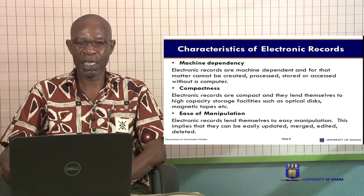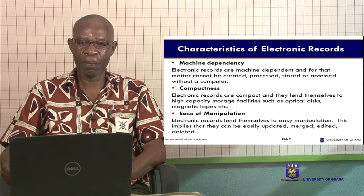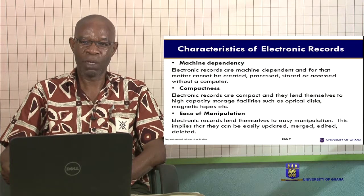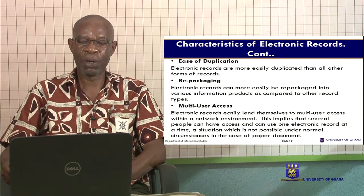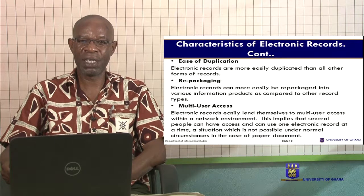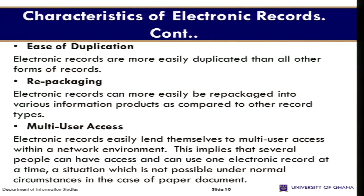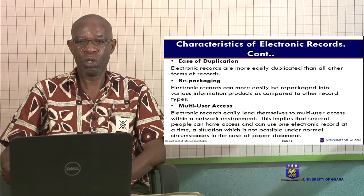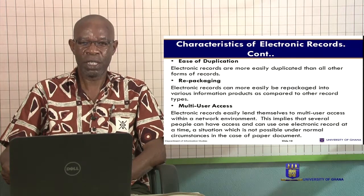Ease of manipulation: Electronic records lend themselves to easy manipulation. This implies that you can easily update them, merge them, edit them, delete them — all at one go, at one sitting. This is not easy when it comes to manual records or paper-based records. Ease of duplication: Electronic records are easily duplicated. In the case of manual records, you can use a photocopier to duplicate it, but in the case of electronic records, that is not too difficult — you can do it through the system.